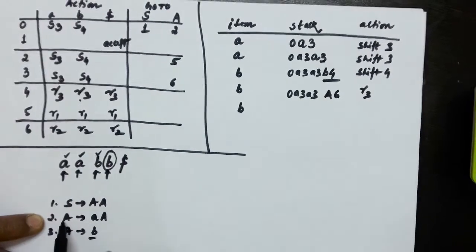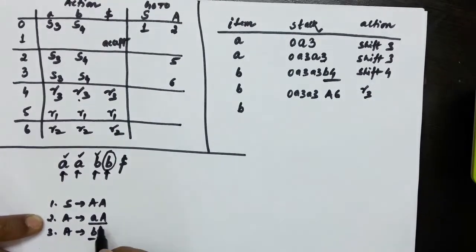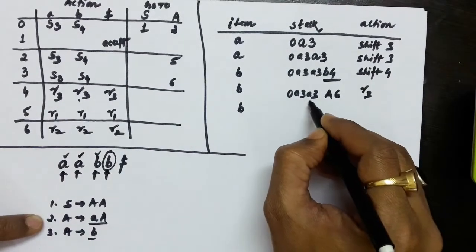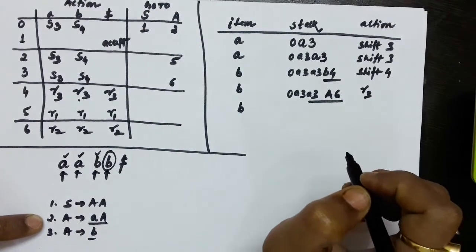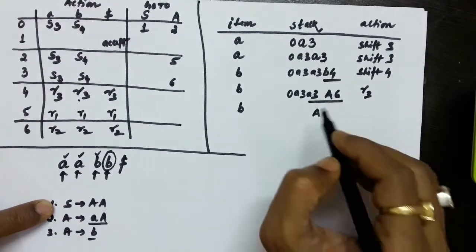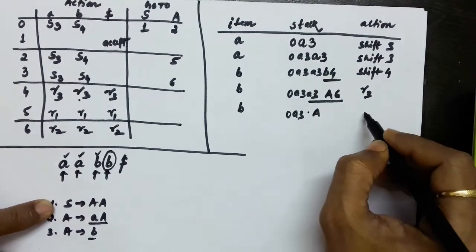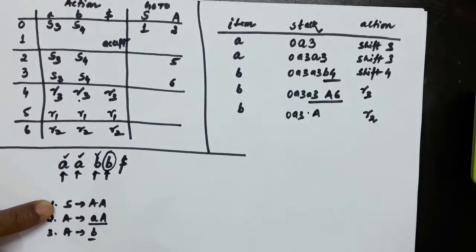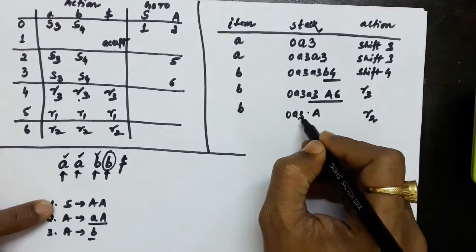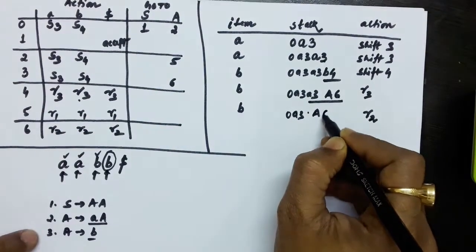Production 2 is: A produces small a capital A. So we must replace small a and capital A with the left-hand side capital A. Since there are two symbols on the right-hand side, we replace four items from the stack — these four symbols become capital A, and the rest remains. The action is R2. Now we have state 3 with capital A, suggesting we go to state 6.